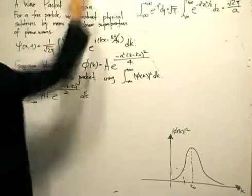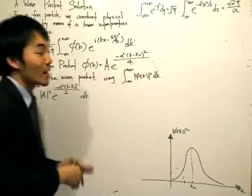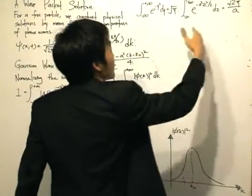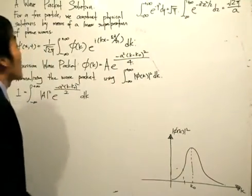So we want to discuss a wave packet solution. Now we need some integration results because we're going to do a lot of integration. Basically, integrating from minus infinity to infinity of these transcendental equations will give us square root π and square root 2π divided by A.